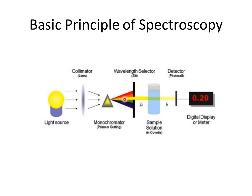The monochromator disperses light into its components. Then we set the wavelength selector to a specific wavelength — for example, only yellow color light is allowed to pass through to interact with our sample. Light then passes through the sample; some portion is absorbed and the rest is transmitted. The next part is the detector, followed by the display recorder, where we get readings as digits of absorption or in the form of a spectrum.